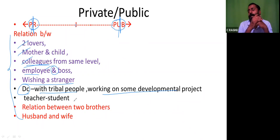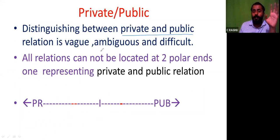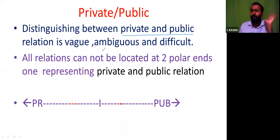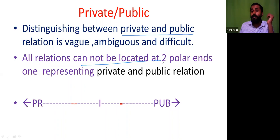All relations fall between two polar ends within a continuum. Distinguishing between private and public relations is very rare, ambiguous, and difficult — it is an exercise in futility. All relations cannot be located at two polar ends, one representing private and another public. They all fall in between. Say for example, your father has 100 acres of land — if he hesitates to give it, you go to court. There is nothing like 100% private or public.